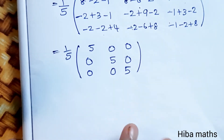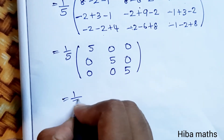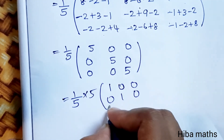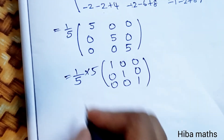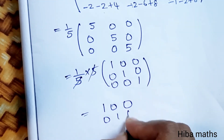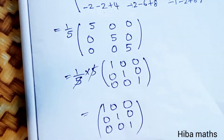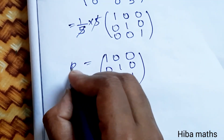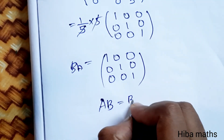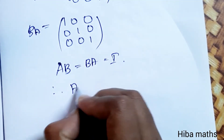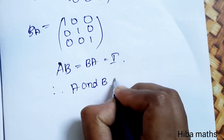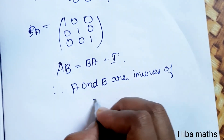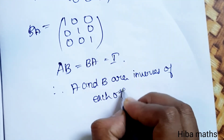Let's verify: 1/5, this 5 is the common value, so we have [1 0 0; 0 1 0; 0 0 1]. From both results B×A and A×B equal I. Therefore, A and B are inverses of each other.